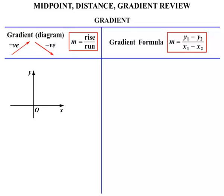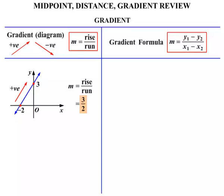Let's work from a diagram firstly. We have a line that cuts the X axis at -2 and the Y axis at 3. The gradient is the rise over the run, and it's going uphill, so it's positive. The rise from 0 to 3 is 3. The run from -2 to 0 is 2. So we have 3 over 2, and that's the way we leave it.